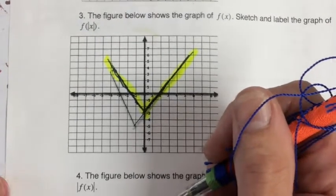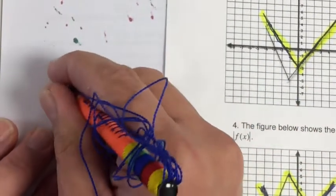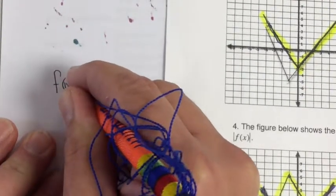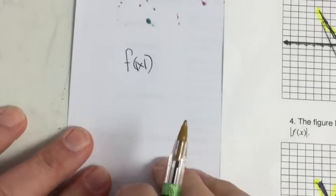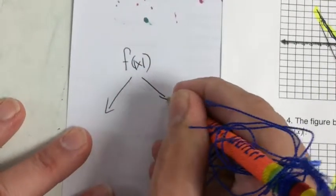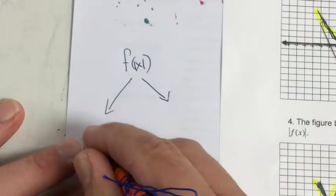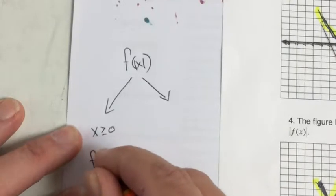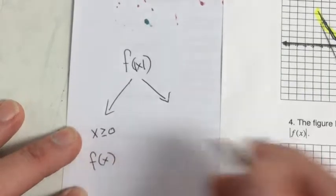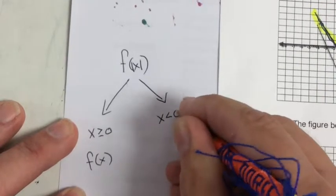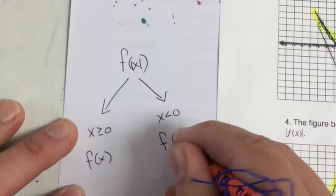Another way to be thinking about this, if you're looking at f of the absolute value of x, if you remember back from algebra 1, the absolute value of x, if x is greater than or equal to 0, then the absolute value of x is just x. And if x is less than 0, the absolute value of x is negative x.